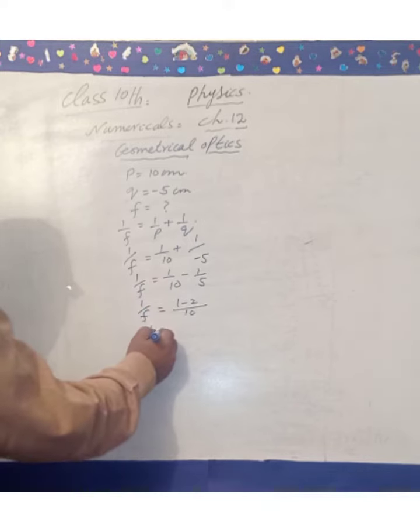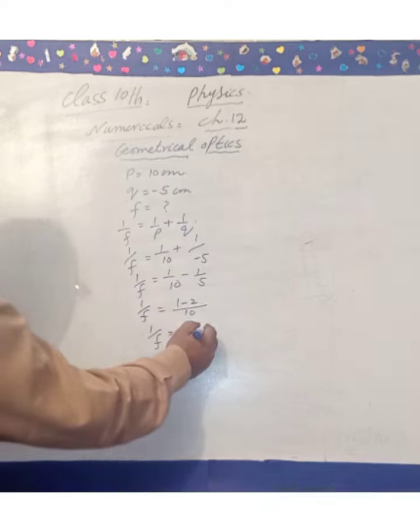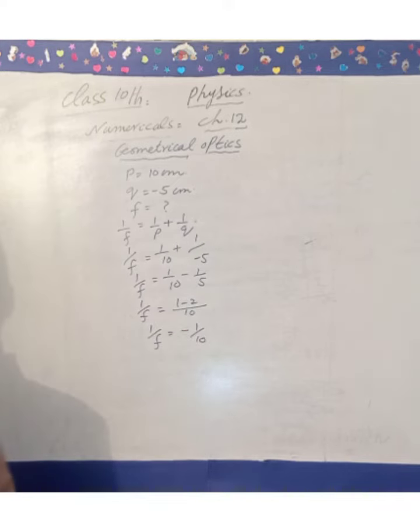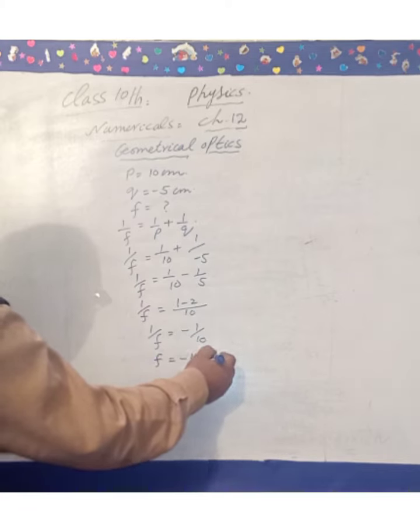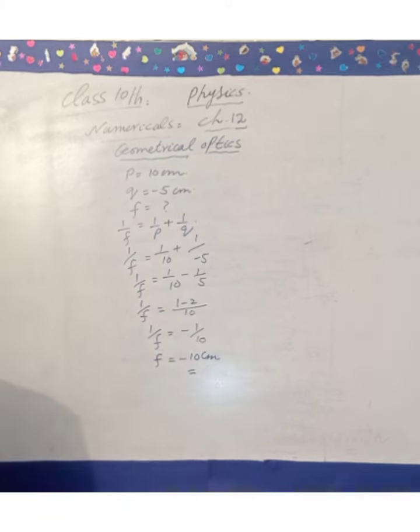1 over f is equal minus 1 over 10. Now we have this, both sides reciprocal. f, what is the focal length of the mirror? Minus 10 cm. This is the focal length of the mirror.